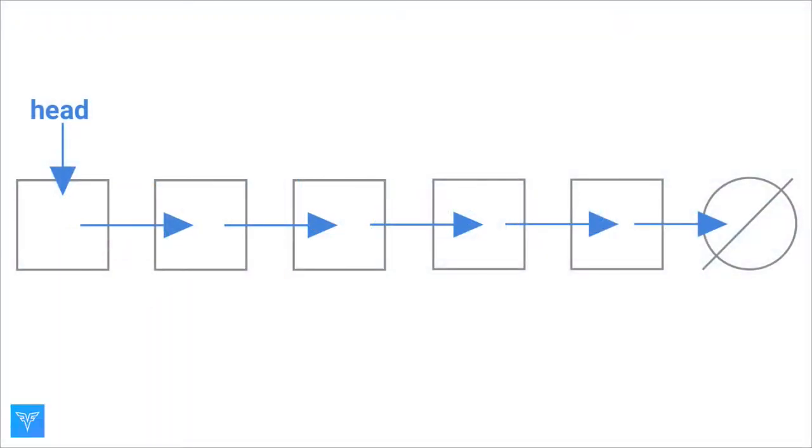We are modeling our linked list by these node objects, where each node stores a value and a next pointer to the next node in the list. The last node in the list points to null to indicate that we have reached the end of the list. We access the linked list by having access to a head pointer at the beginning of the list.